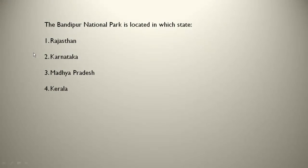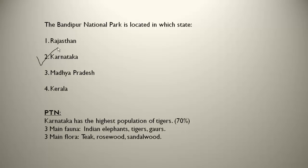The Bandipur National Park is located in which state? Bandipur National Park is located in Karnataka. Karnataka has the highest population of tigers — around 70% of the country's tiger population is in Karnataka. The three main fauna are Indian elephants, tigers, and gaurs. The three main flora are teak, rosewood, and sandalwood.